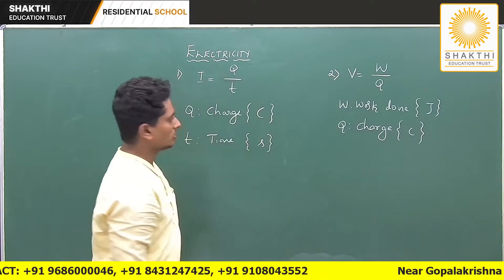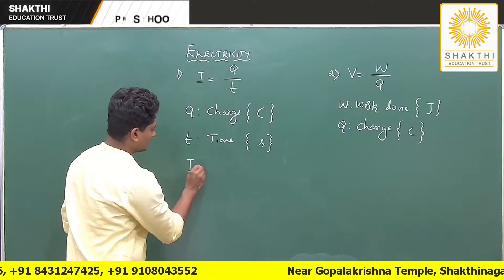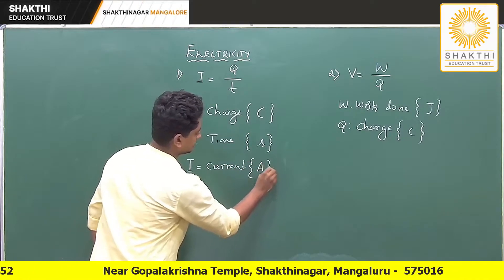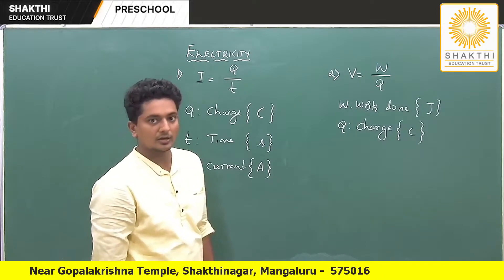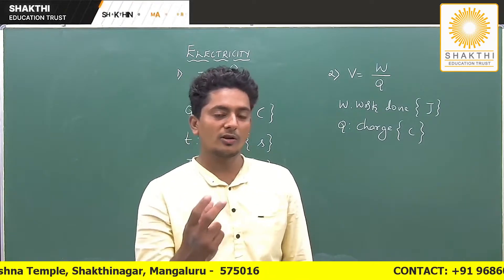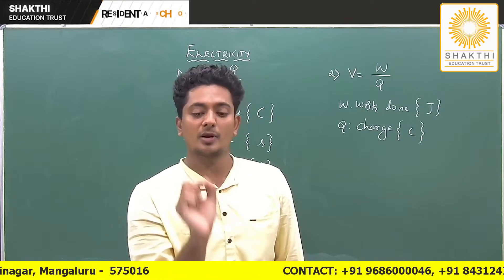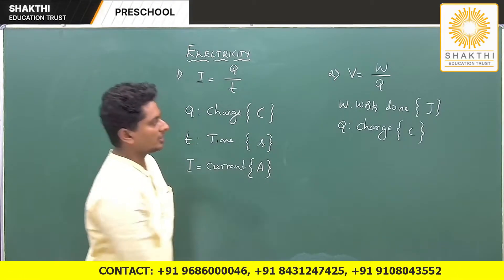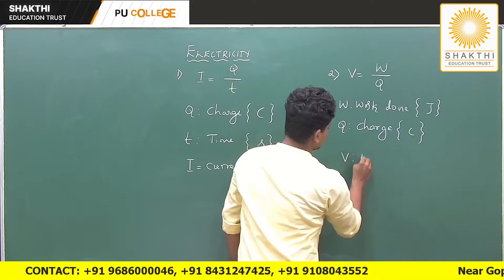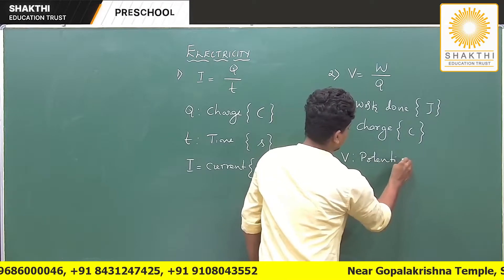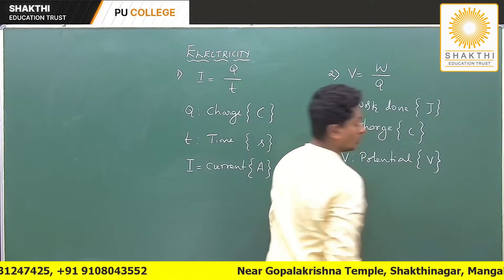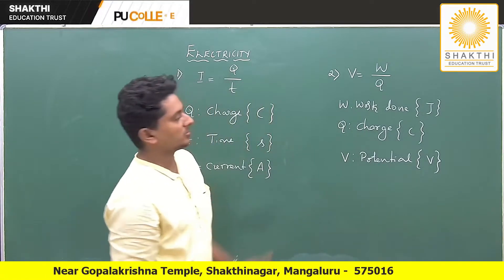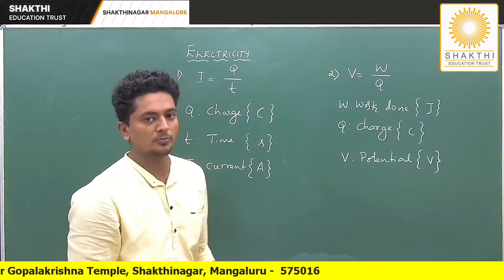Current I has SI unit ampere. You might have seen this on your charger — written as ampere or milliampere, capital A. That is nothing but this current I. Similarly, V is potential with SI unit volt — 1 volt, 2 volt. These are the two important formulas you must know from this chapter, and we have a few more coming next.